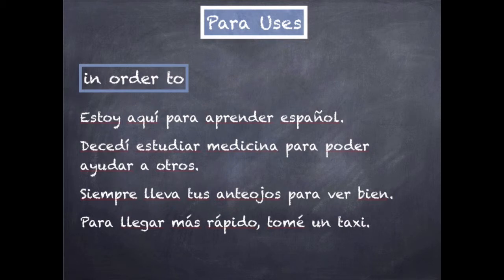I'm going to continue learning about por and para by looking at the uses for para. The primary, most common use that you'll see is meaning 'in order to.' So let's look at some examples. 'Estoy aquí para aprender español' — I am here in order to learn Spanish, or simply 'I am here to learn Spanish.' Often you don't need to say the full phrase 'in order to' in English, but when you could say it, you need para.